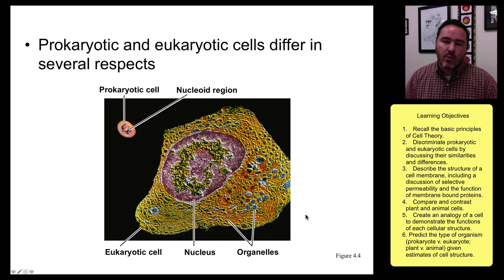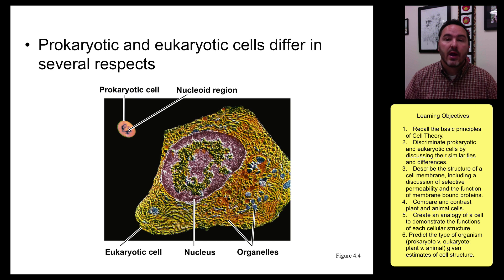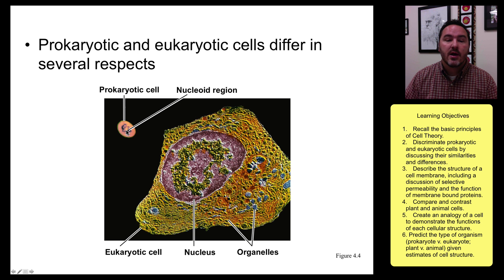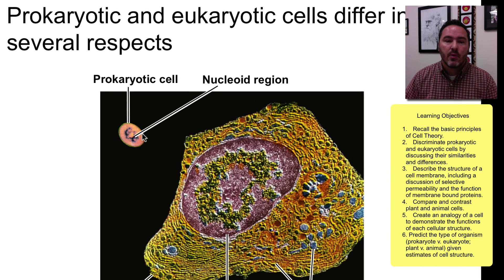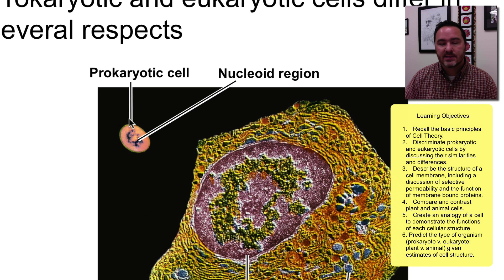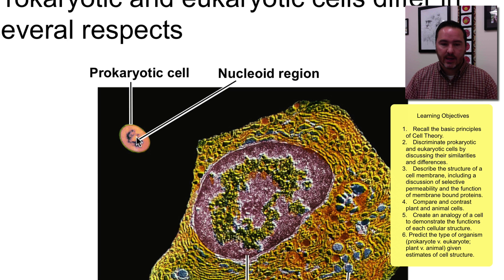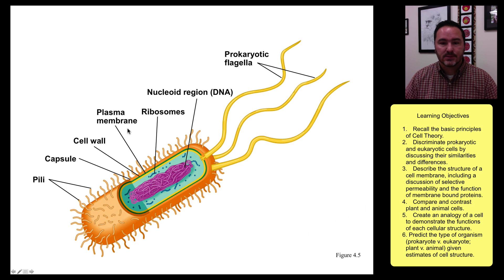There are two types of cells: prokaryotic cells and eukaryotic cells. Eukaryotic cells are much larger and have a nucleus and organelles, whereas prokaryotic cells are much smaller, do not have a nucleus — rather they have a nucleoid region — and have very few organelles.